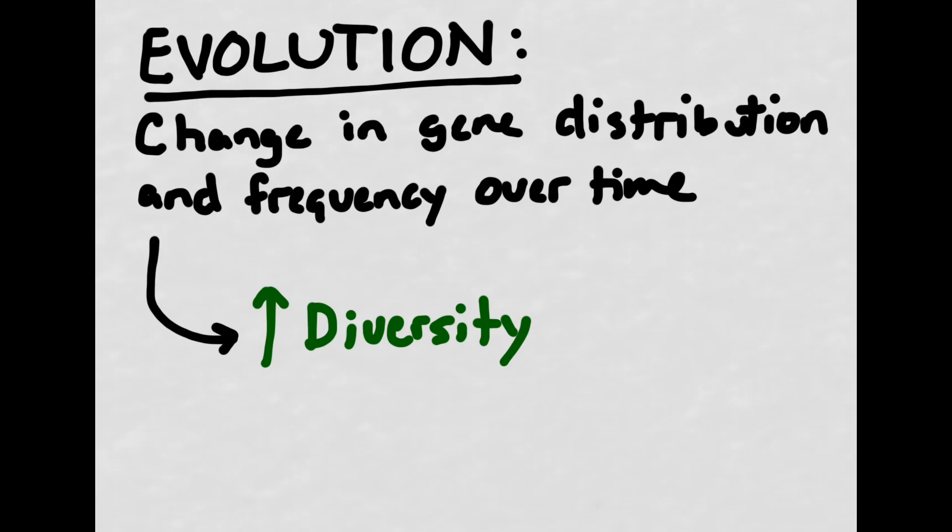Ultimately, this is going to lead to an increase in diversity at every level of biological organization. The more diversity you have, the better a chance your offspring have of surviving, particularly in an environment that happens to be constantly changing. We'll come back to this in a few minutes, but keep this in mind as we start talking about sexual reproduction.